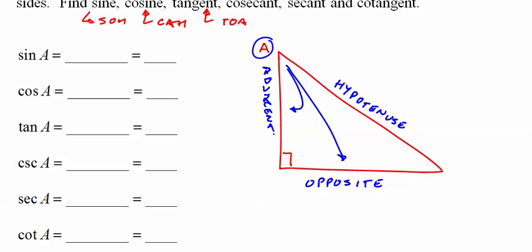And any triangle with a right angle and this same degree up here, no matter how big, will have all these ratios be the same. Sine is the opposite side divided by the hypotenuse.